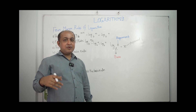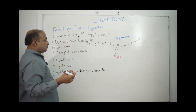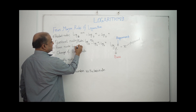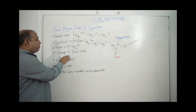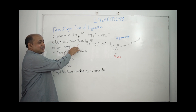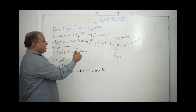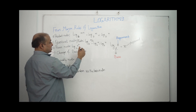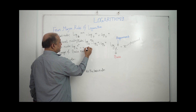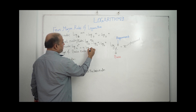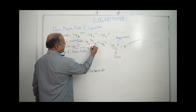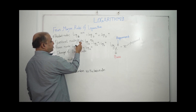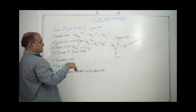This is very vital. The power rule: log base b of a to the power n equals n times log base b of a. The exponent comes out as a multiplying factor in front of the log.